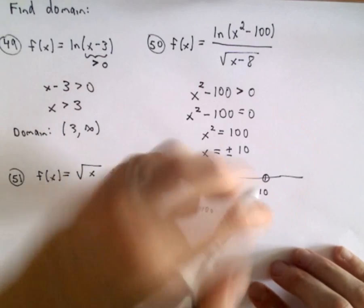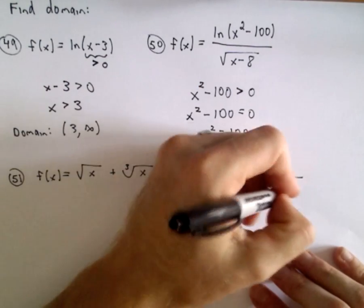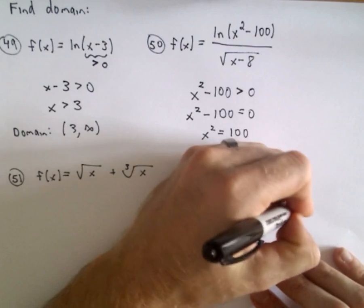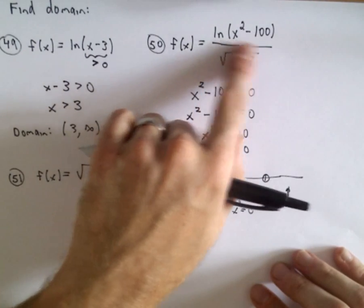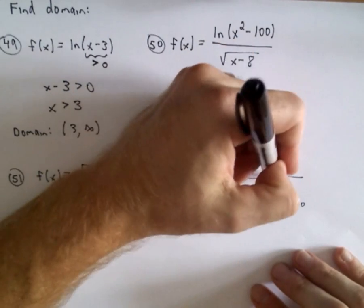And if I take something larger than positive 10, say, you know, x equals 100, well, again, then I'm going to get a positive number inside of my logarithm. So those values work.